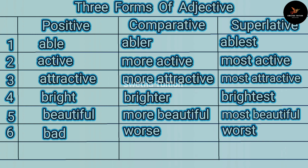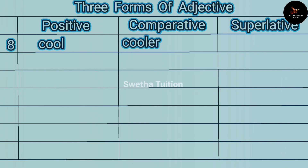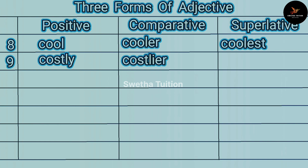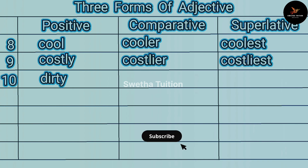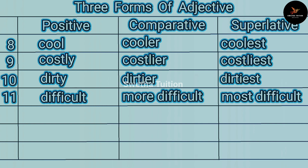Number four: bright, brighter, brightest. Number five: beautiful, more beautiful, most beautiful. Number six: bad, worse, worst. Number seven: clever, cleverer, cleverest.